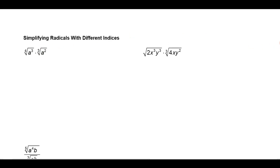If those indices were the same — if I had the square root of a cubed times the square root of a squared — I could put those under the same radical. That would just be the square root of a to the fifth and I could simplify them. But here I have different indices and I don't have a rule for that. So all I can do is think of these in terms of their corresponding rational exponents, fractional exponents, and then use my rules of exponents to simplify them.